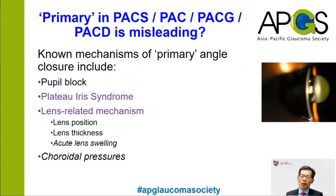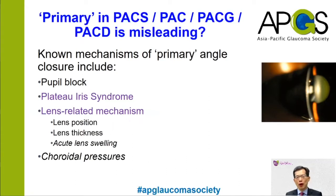The word 'primary' in primary angle closure disease usually implies that we are not aware of the underlying causes or mechanisms, and so this can be misleading, because we are at least aware of several important mechanisms that lead to angle closure in primary angle closure disease. These include pupil block, plateau iris syndrome, lens-related mechanisms, and also possibly choroidal pressures.